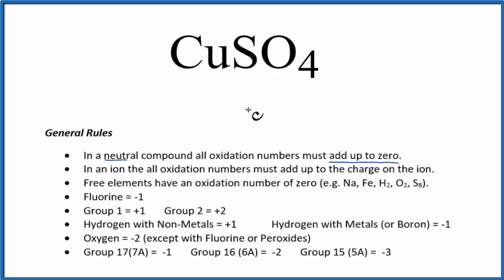So with this compound CuSO4, copper is a transition metal. It can have several different oxidation states, and we don't see sulfur on our list here. So we need to be able to recognize that SO4, that's called the sulfate ion, and its formula is SO4 two minus.